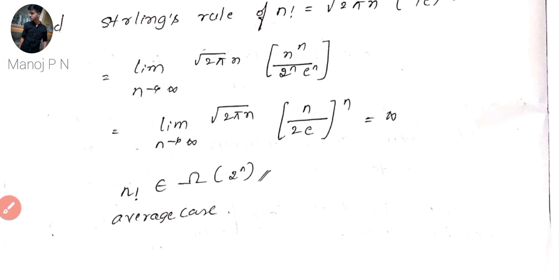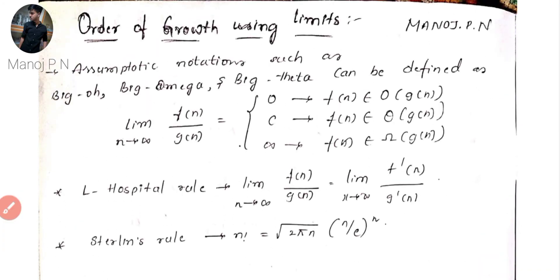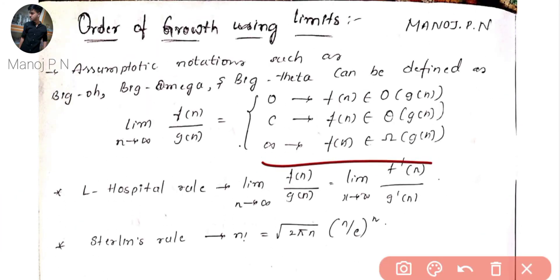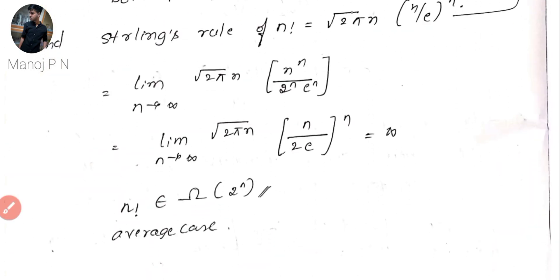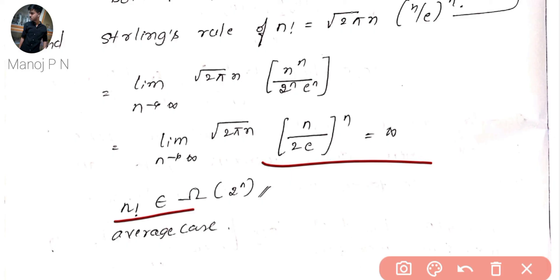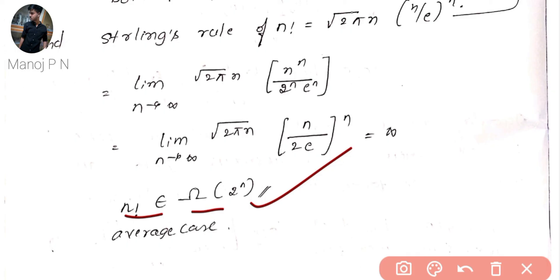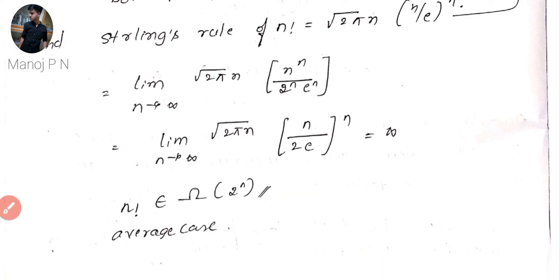Since we get infinity, this comes under the Omega case. So f(n) = n! belongs to Omega(2^n). This is how we solve these problems using the limit definition along with L'Hospital's rule and Stirling's formula. I hope this video was useful. Thanks for watching, happy learning!